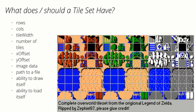A Tileset should have the ability to draw itself to the screen so we can verify it loaded correctly. It should also have the ability to load itself — meaning if I have one Tileset and want to exchange it for another, I should be able to reload a new Tileset and replace the old one. That's a good starting point, though not necessarily everything a Tileset should have.